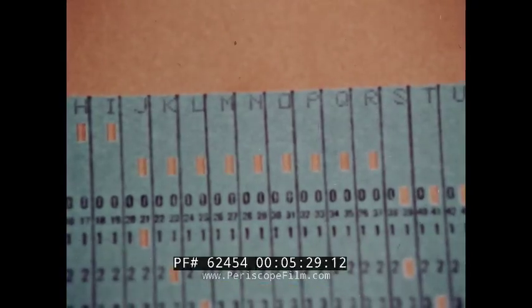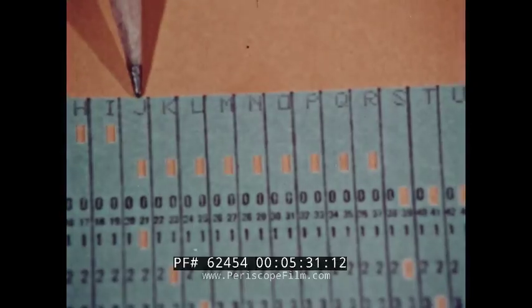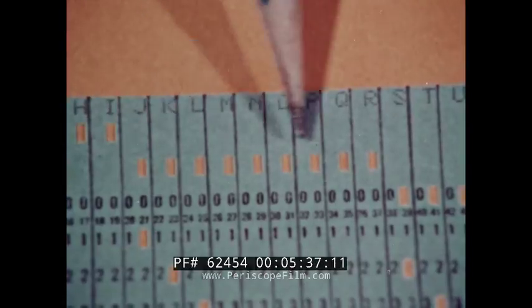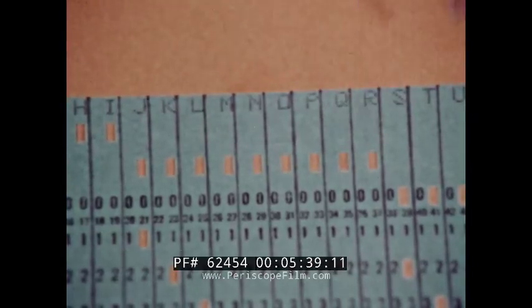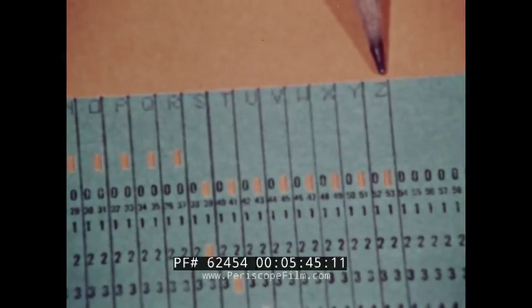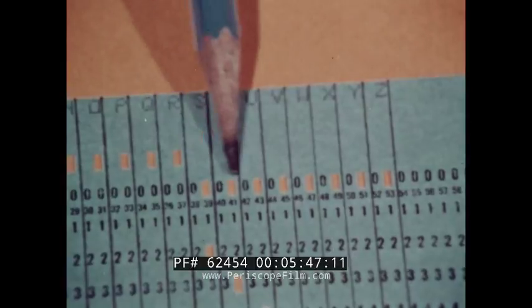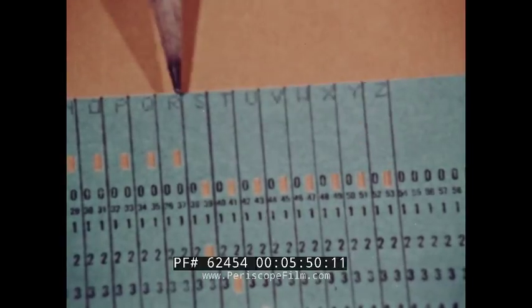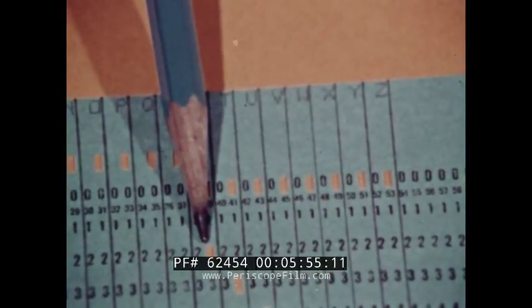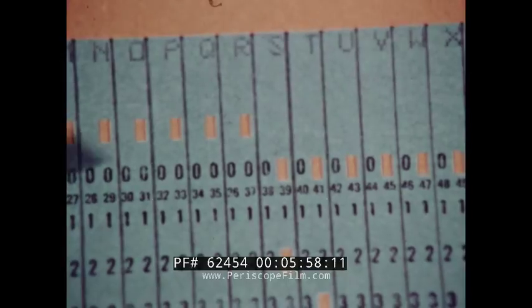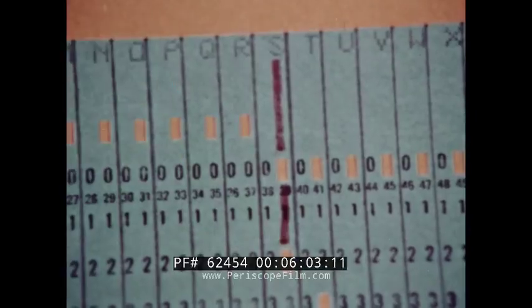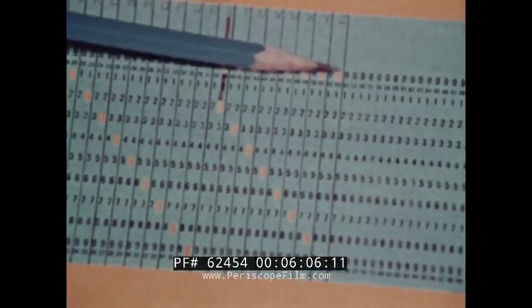The second set of nine letters J to R is indicated by making use of the 11 zone. The last eight letters S to Z use the 0 zone. Here is the exception: S is punched 0 and 2, thus ending with Z as 0 and 9.